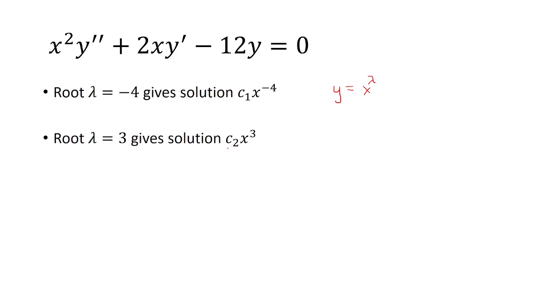So finally, we can bring this all together and say that our solution is c1 times x to negative 4 power plus c2 times x cubed.